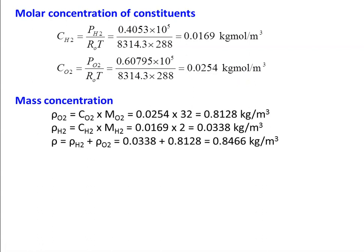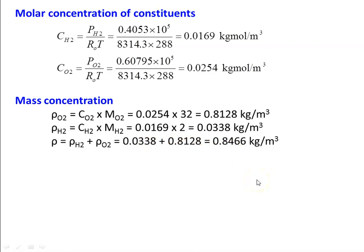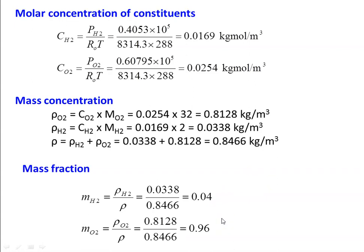We calculate the mass concentration. Density of O2 in the mixture: ρO2 = CO2 × molecular weight of O2 = 0.0254 × 32 = 0.8128 kg/m³. Density of H2: ρH2 = CH2 × MH2 = 0.0169 × 2 = 0.0338 kg/m³. Total density of mixture: ρ = ρH2 + ρO2 = 0.0338 + 0.8128 = 0.8466 kg/m³. Mass fraction MH2 = ρH2/ρ = 0.0338/0.8466 = 0.04. Mass fraction MO2 = ρO2/ρ = 0.8128/0.8466 = 0.96.